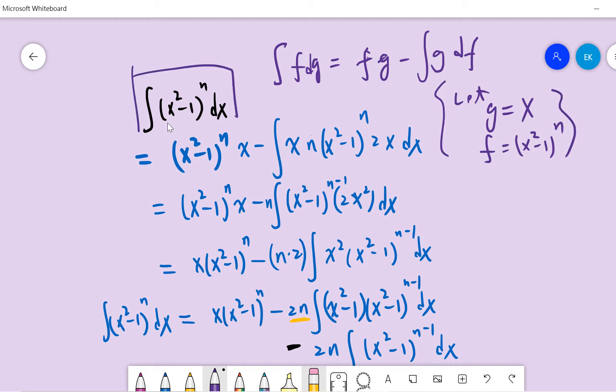So this one, right, this one. You get this. This and the df. df basically is n times x squared minus 1 to the power n minus 1 dx. So we have this.